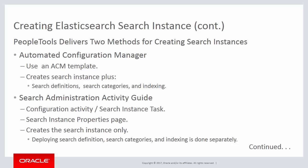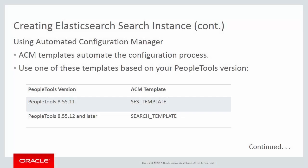To use Automated Configuration Manager to create an Elasticsearch instance, you use a delivered template that automates the configuration process. The template you choose is based on your version of PeopleTools. For PeopleTools 8.55.11, use SES_template. For PeopleTools 8.55.12 and later releases, use the search_template. In this presentation, we're using PeopleTools 8.55.13, so we'll be using the search_template.